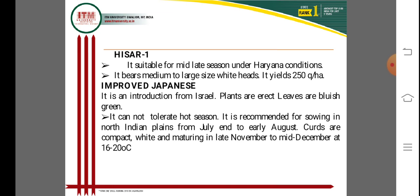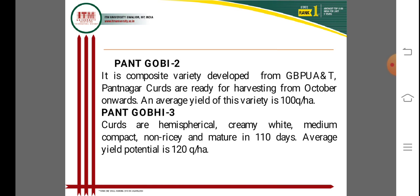The Improved Japanese variety was introduced from Israel. Plants are erect with blue-green leaves. It cannot tolerate hot seasons. It is recommended for sowing in north Indian plains from July to early August. Curds are compact and white, maturing in mid-December. The recommended temperature for cultivation is 16 to 20 degrees centigrade.